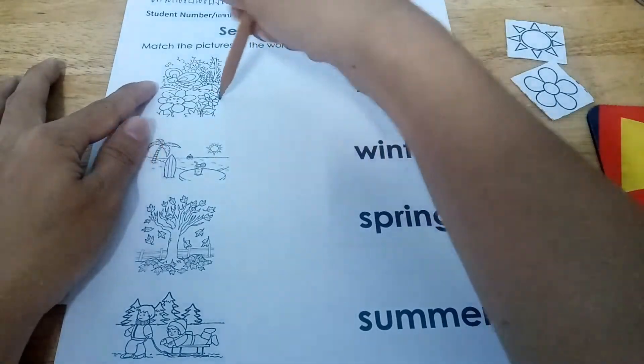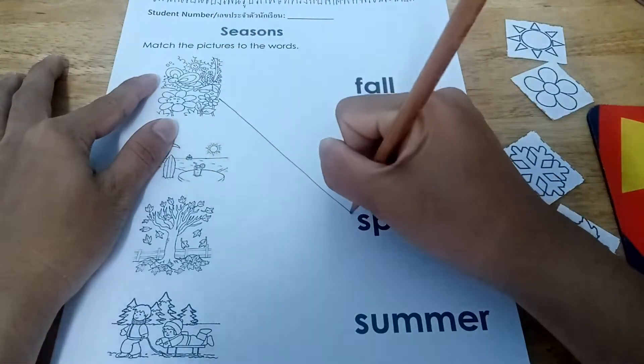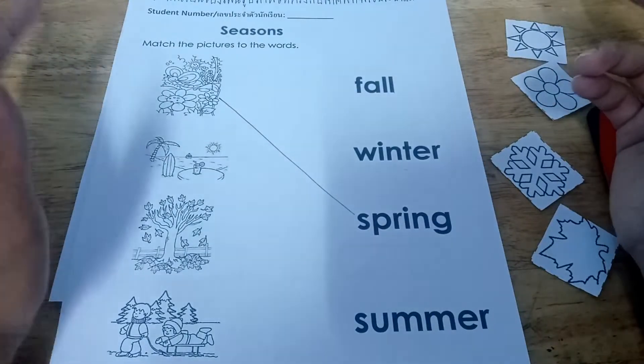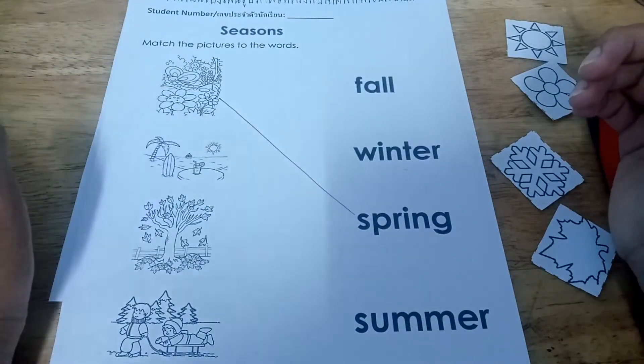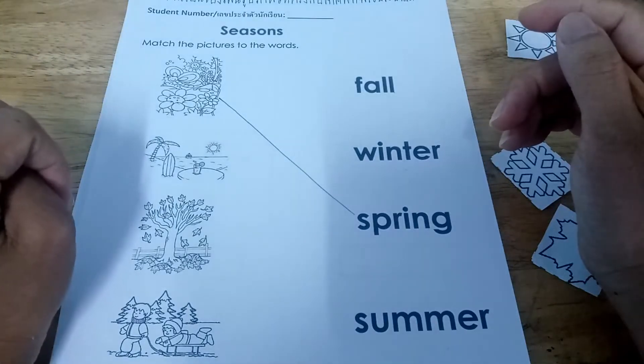Okay, this is for spring. Okay, that's it. That's the thing. How are you going to do your activity? You're going to match the picture to the words.